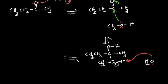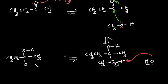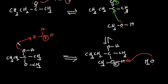You have to understand that when you are working with a reaction mechanism in acidic medium. Now we already made one acetal intermediate here. This oxygen has a lone pair, and this lone pair attacks another hydronium ion to grab one hydrogen.